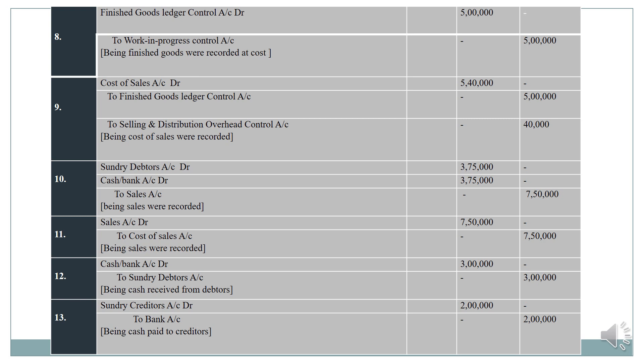For sales: 50% on credit — 7,50,000 rupees. Remaining 50% on cash basis. So 50% credit basis — debtors account is debited 3,75,000; cash basis — bank account is debited 3,75,000. Total sales 7,50,000 — entry: debtors account and bank account debit to sales account.